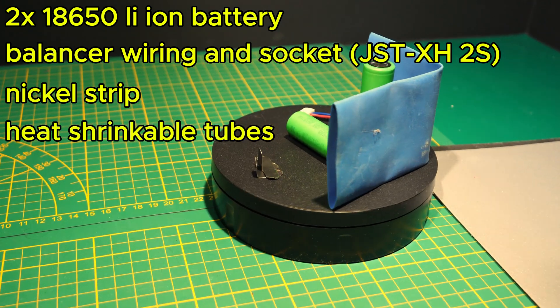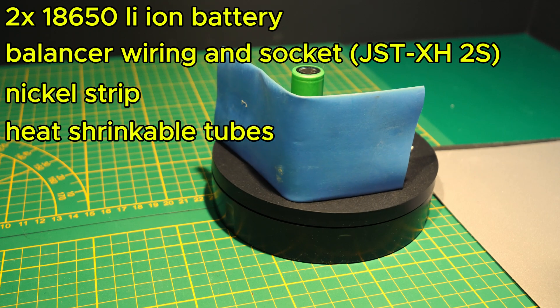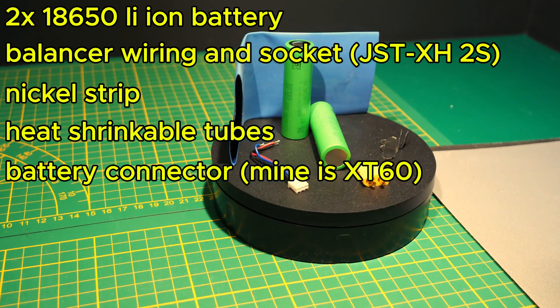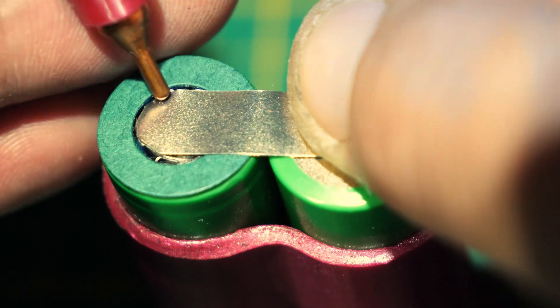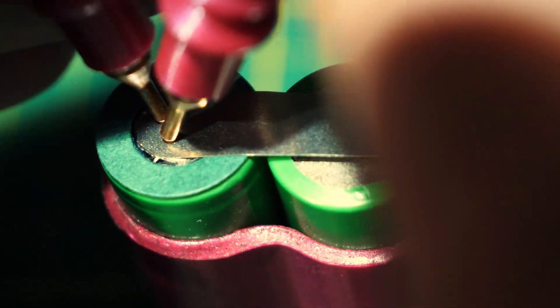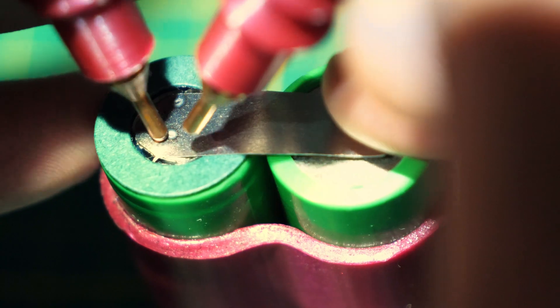Few heat shrinks to protect the wires and the battery itself. Battery connector. In my case it's an XT60 but you can use whatever you like.